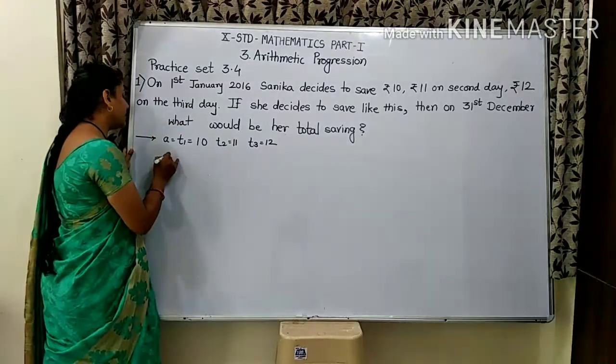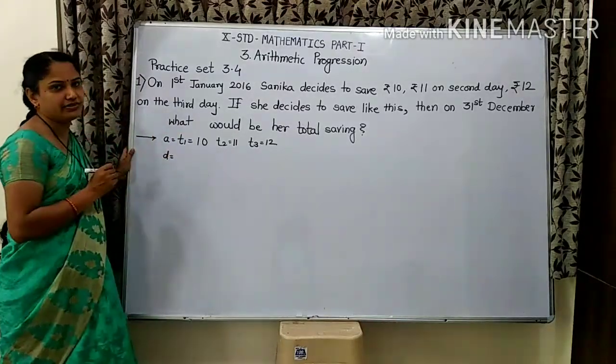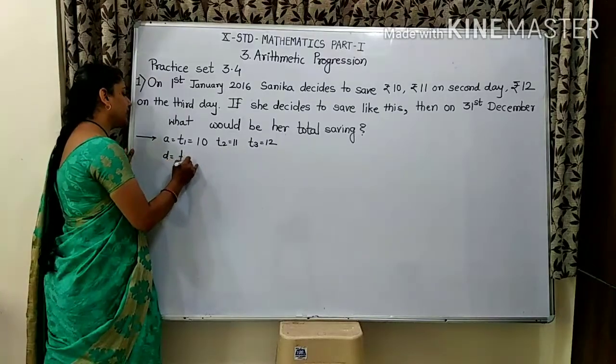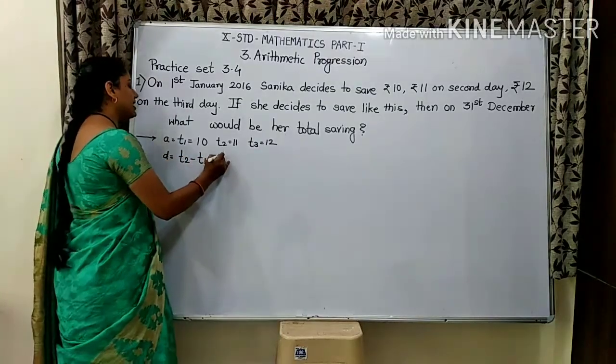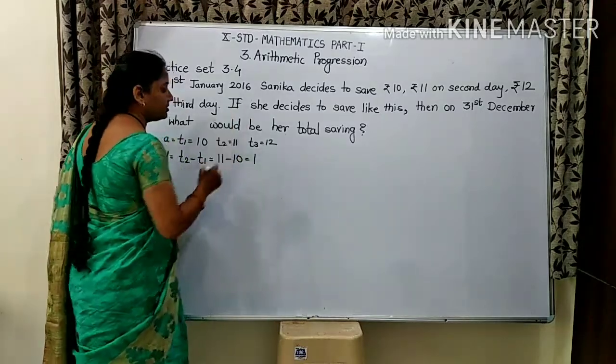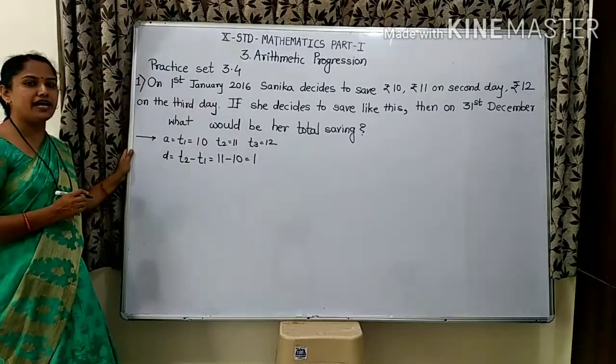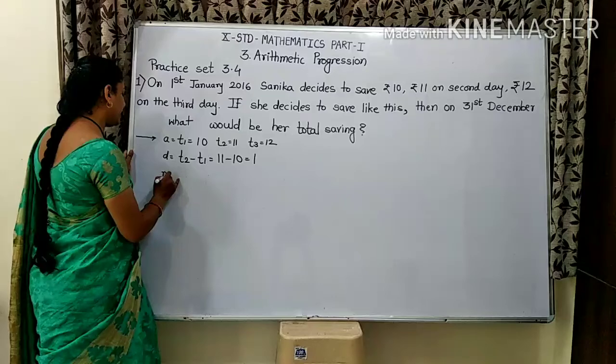Now we will find out D. D means common difference. That is equal to T2 minus T1. 11 minus 10, that is 1. Now we need N.